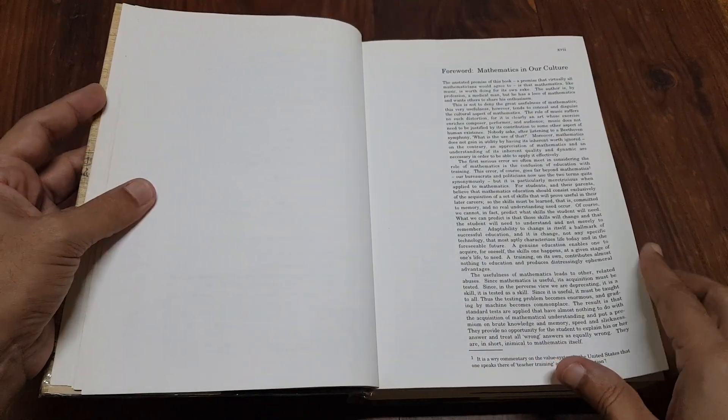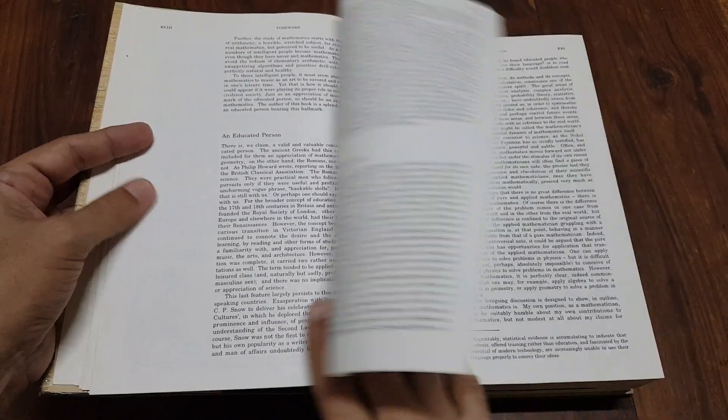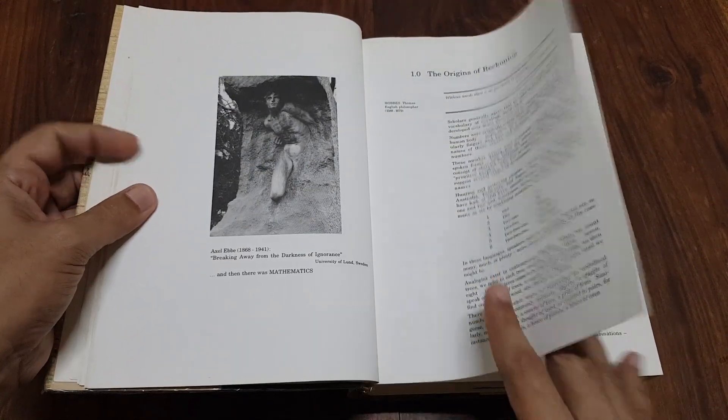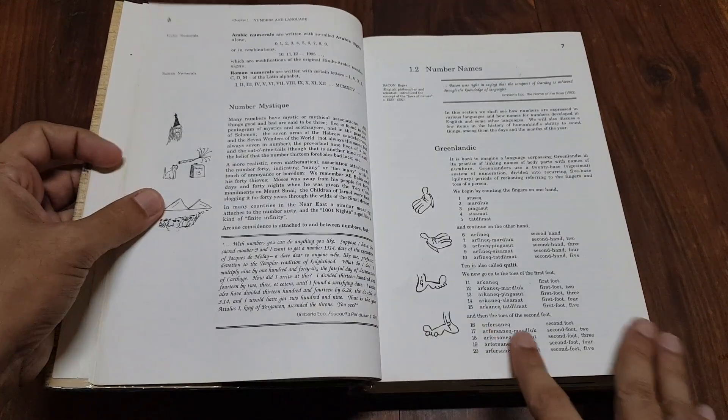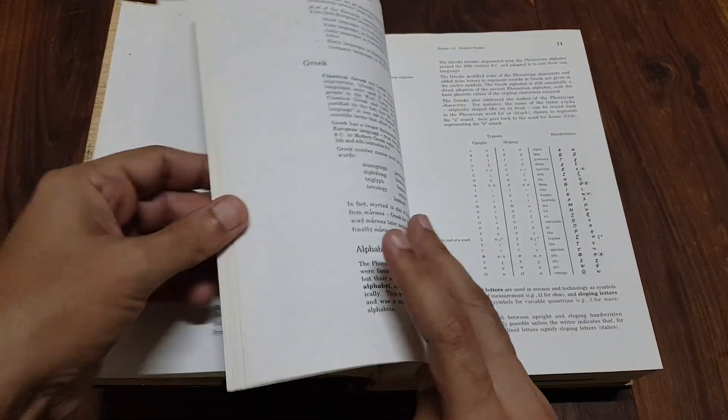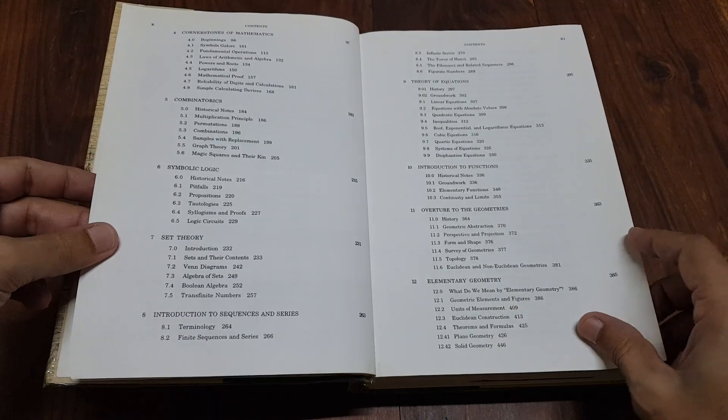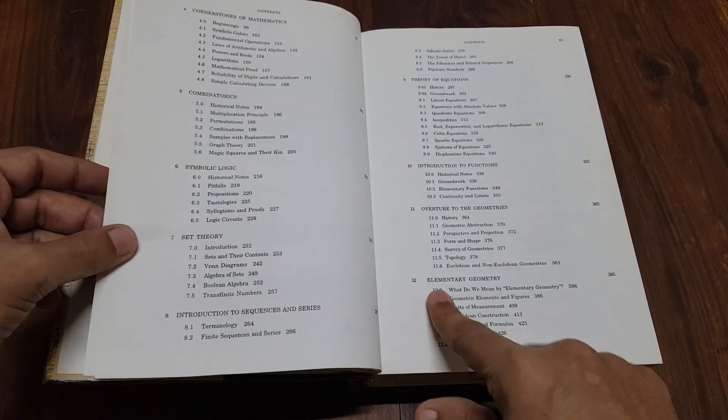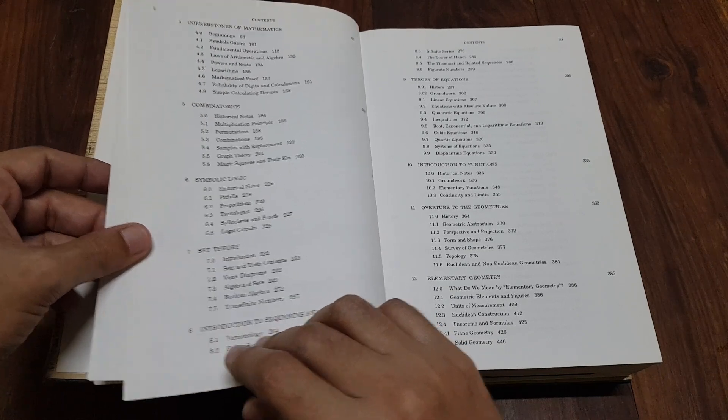The book covers a wide range of topics from basic arithmetic to more advanced topics such as calculus, number theory, and probability. It is organized in a roughly chronological order, tracing the historical development of mathematical concepts. Each chapter builds on the previous ones, creating a cohesive narrative that connects different areas of mathematics.